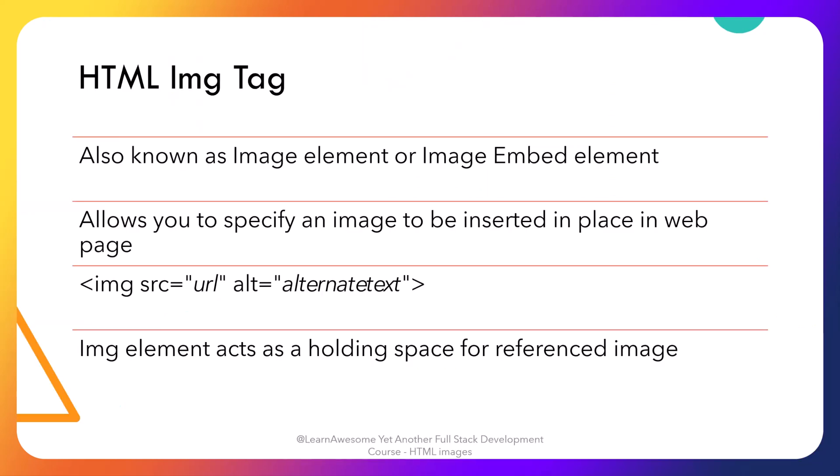An HTML image tag, also known as image element or image embed element, is a way to instruct browsers that you need to insert or embed an image at a specified location in the web page. This is different from a background image where we specify a background image as style for a container and it repeats. Here we are doing an active embed via a proper HTML element.